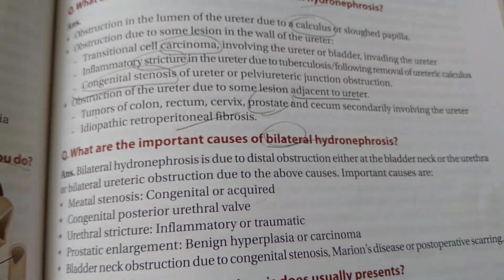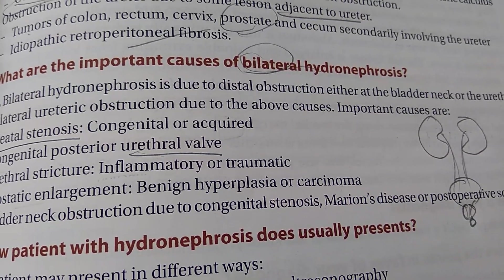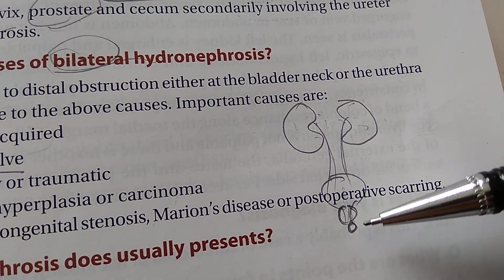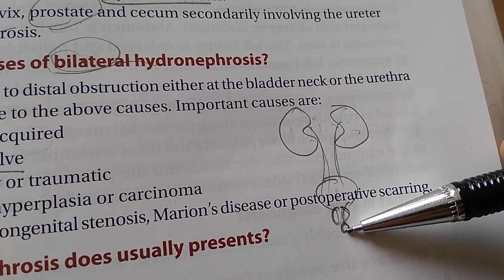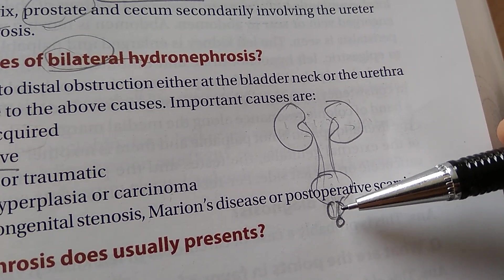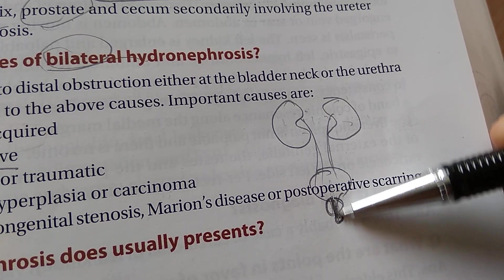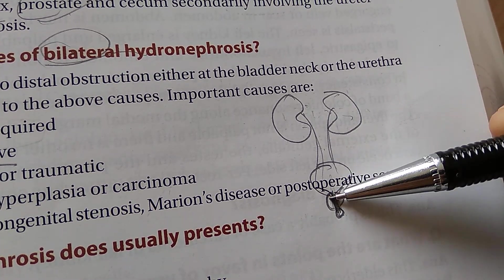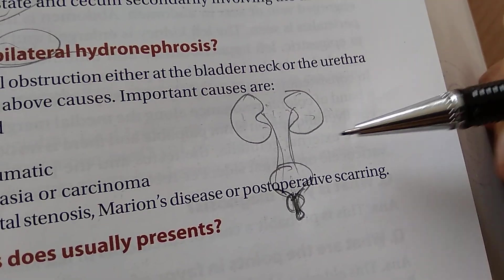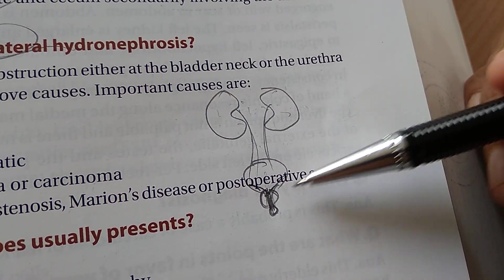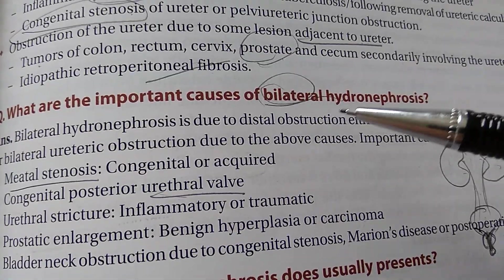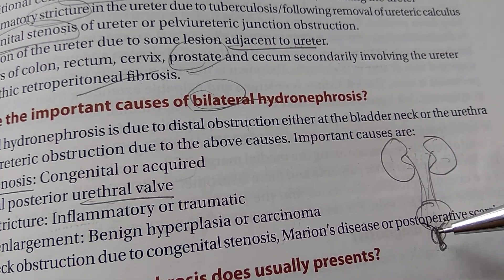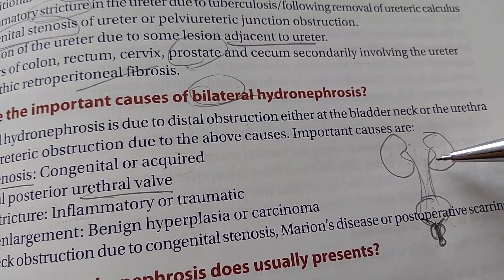If hydronephrosis is bilateral, something is affecting both kidneys — it must be a pathology at the level of the bladder or beyond. Causes include prostatic enlargement, meatal stenosis, urethral valve problems, urethral stricture, bladder neck obstruction due to congenital stenosis or Marion's disease, or postoperative scarring. So bilateral hydronephrosis means backflow to both kidneys from a common distal obstruction.